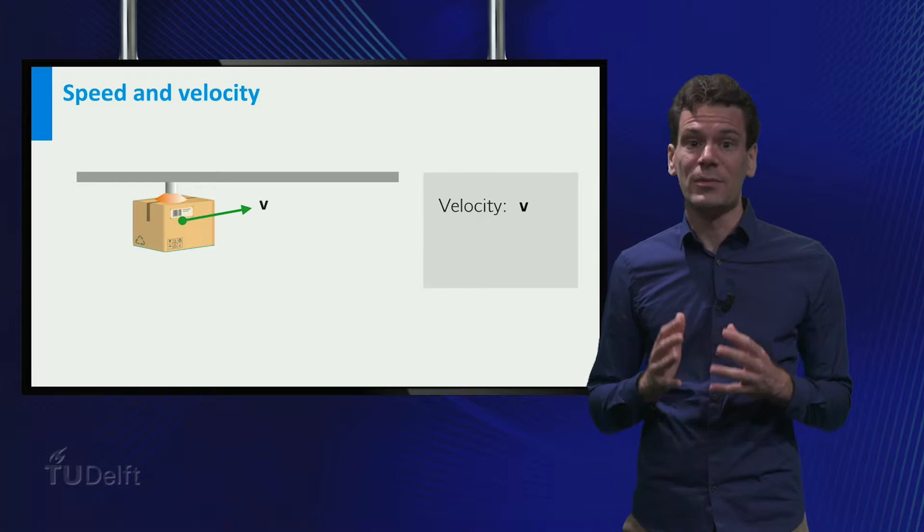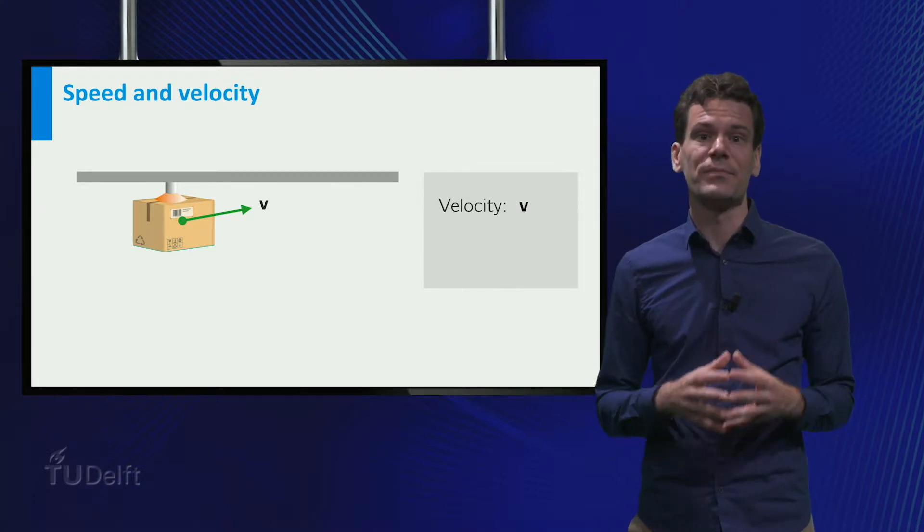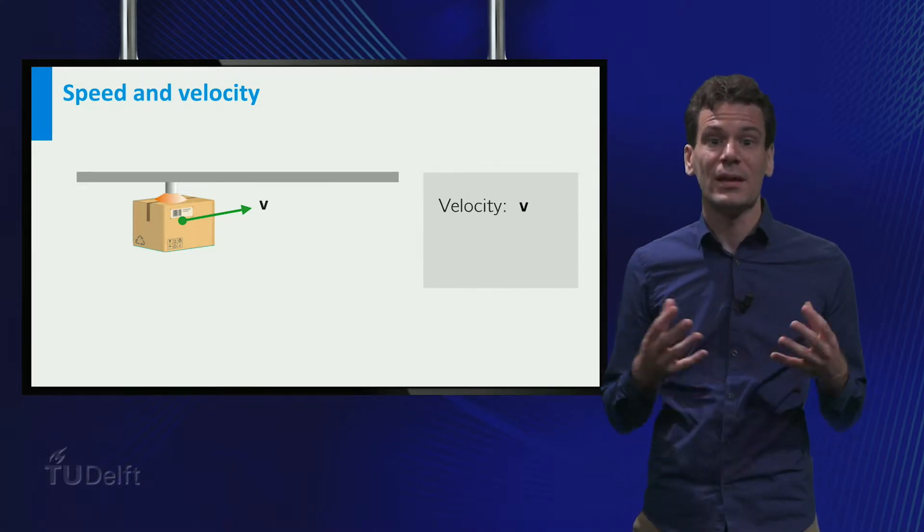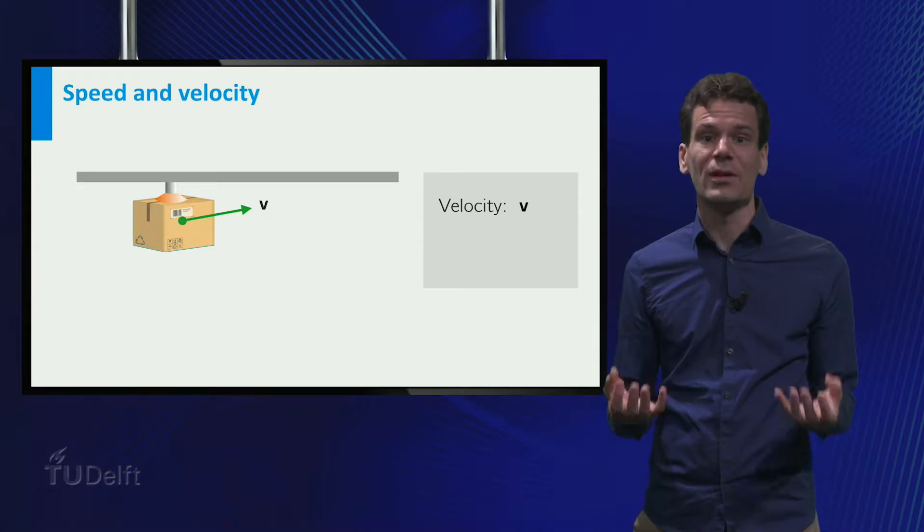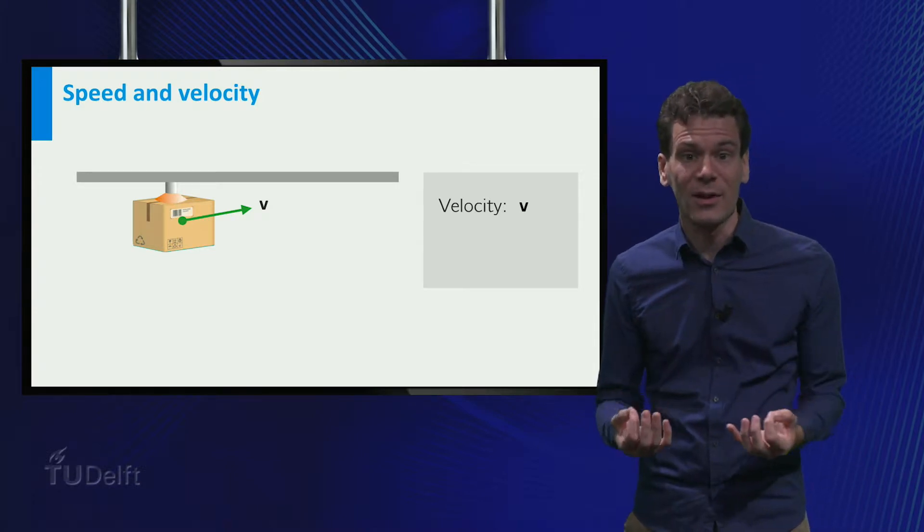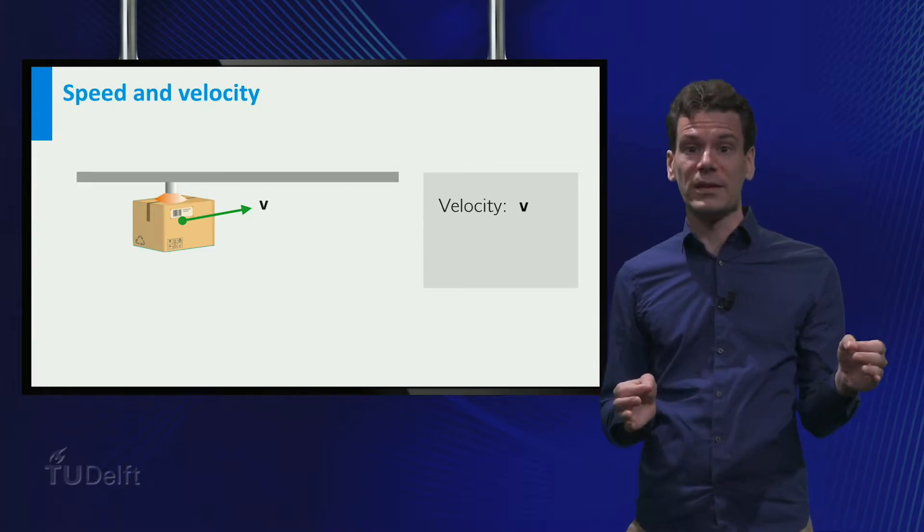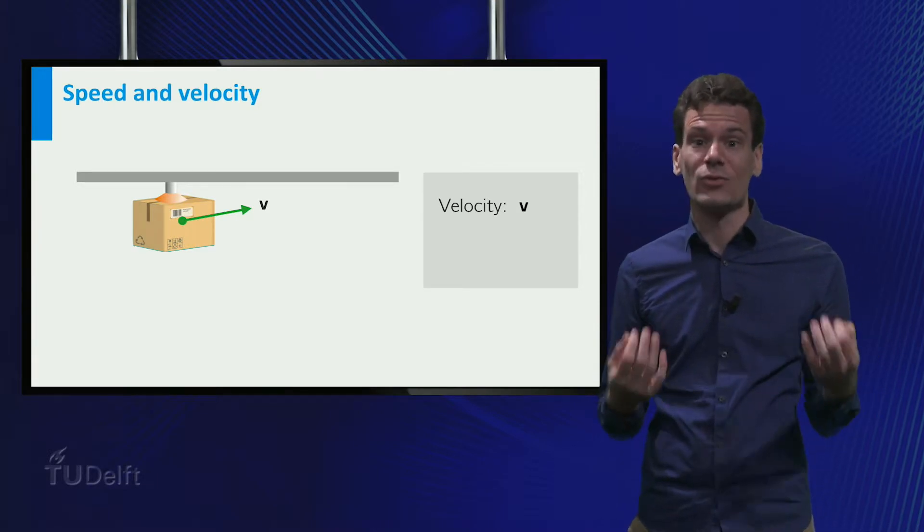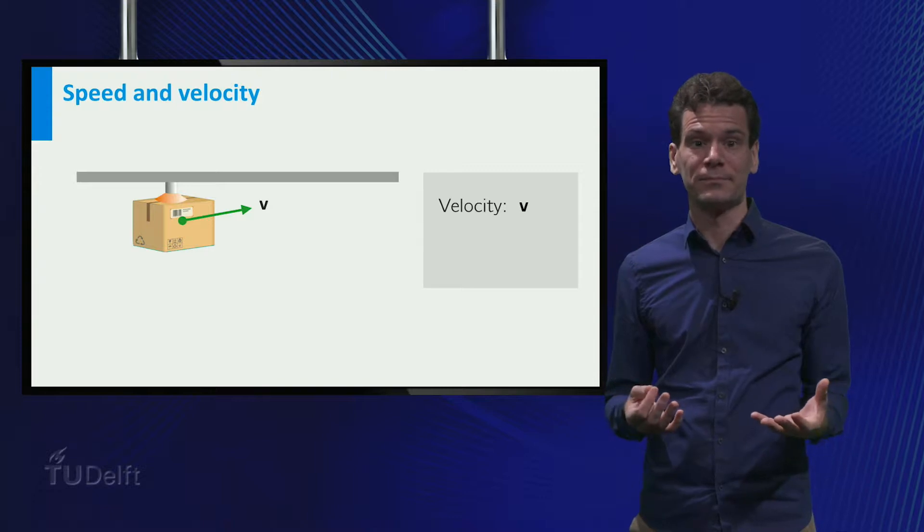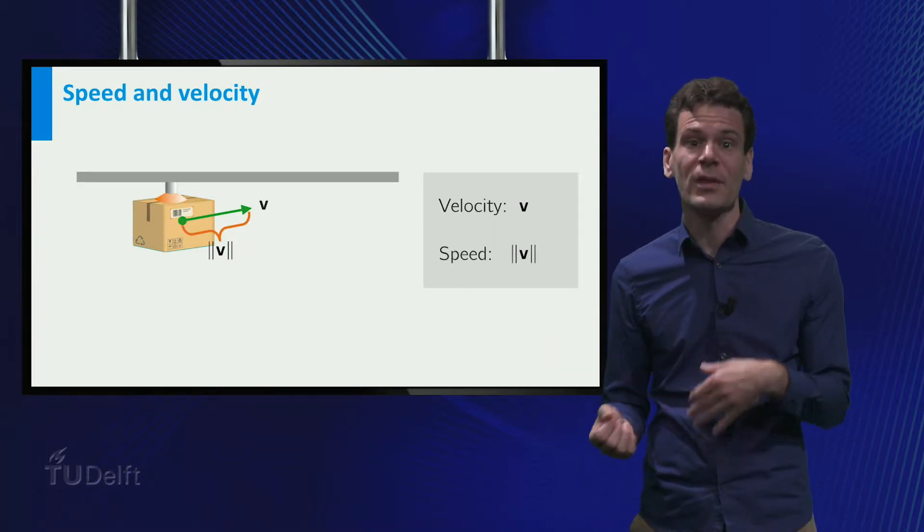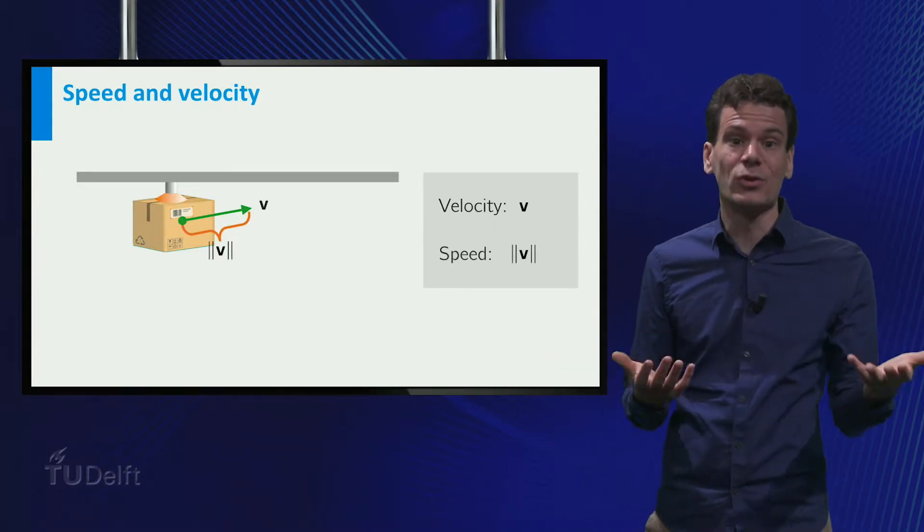Note that at any time the box moves at a certain speed in a certain direction. These two pieces of information can be nicely described by a vector which points in the direction of motion and has norm equal to the speed. This vector is called the velocity of the object. If you know the velocity vector, you can find the speed by simply taking the norm.